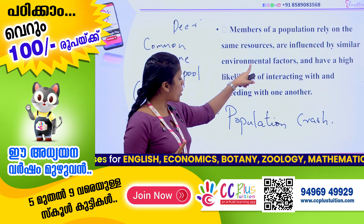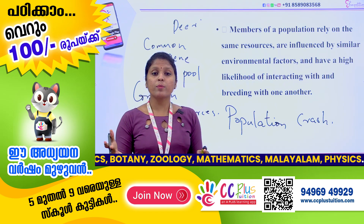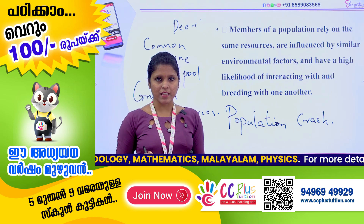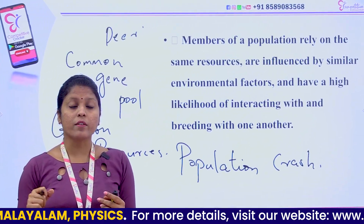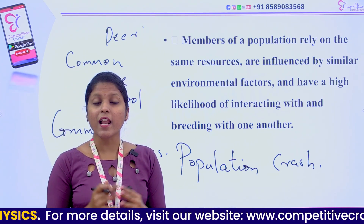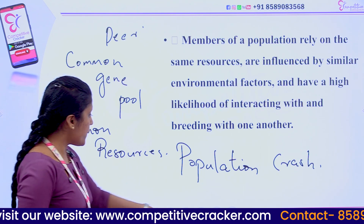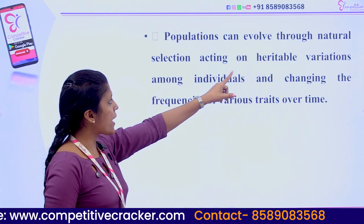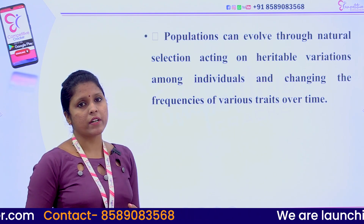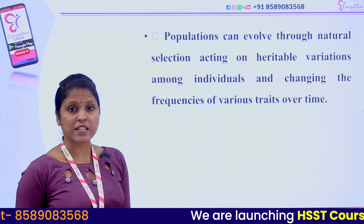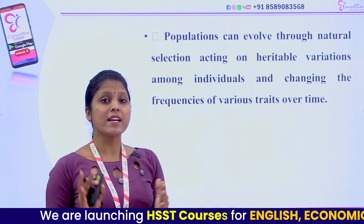An important point: populations are influenced by similar environmental factors such as light, temperature, and humidity. Populations can evolve through natural selection acting on heritable variations among individuals and changing the frequencies of various traits over time. This is a characteristic feature of a population. Mutation is also a relevant point here.